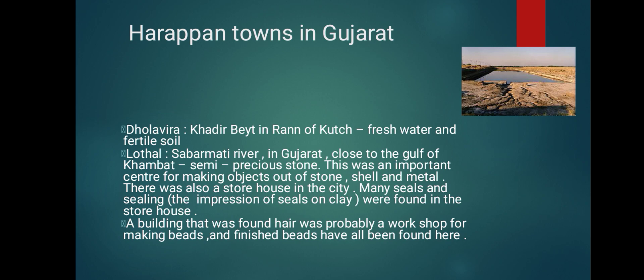The city of Lothal stood beside a tributary of the Sabarmati in Gujarat, close to the Gulf of Khambhat. It was situated near areas where raw materials such as semi-precious stones were easily available. Lothal was an important center for making objects out of stone, shell, and metals. There were also storehouses in the city. A building found here was probably a workshop for making beads — pieces of stones, half-made beads, tools for bead-making, and finished beads have all been found here.